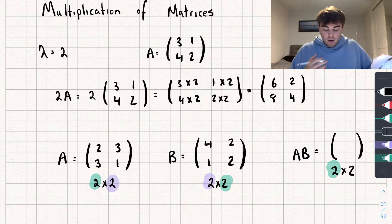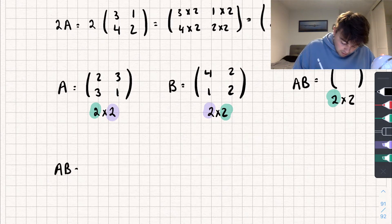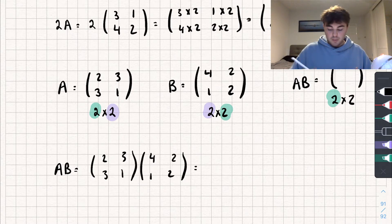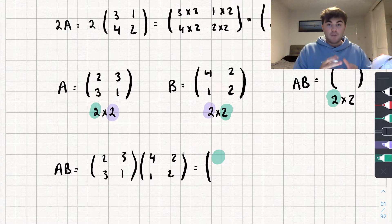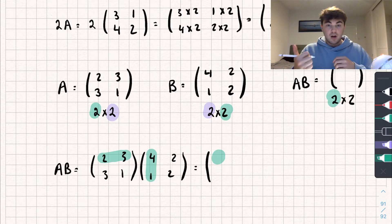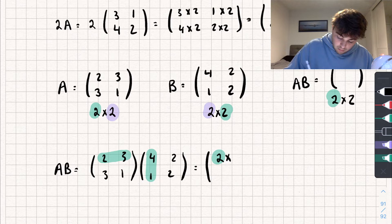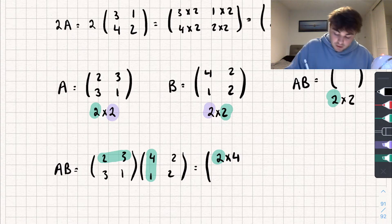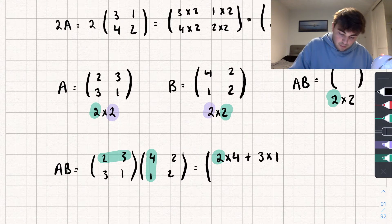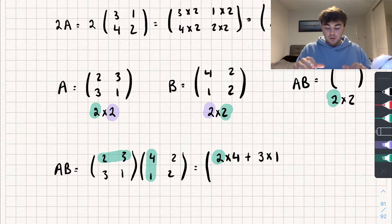But how do we actually multiply them? So say we take AB: that's [2, 3; 3, 1] multiplied by [4, 2; 1, 2]. We know a 2 by 2 matrix is going to come out. Say I want to find the first row, first column element of my new matrix — this one in the top left. I'm going to look at the first row of matrix A and the first column of matrix B, then take the first element of the first row and multiply it by the first element of the first column. So we'd get 2 multiplied by 4, and then add on 3 multiplied by 1. That gives me the first row, first column element.